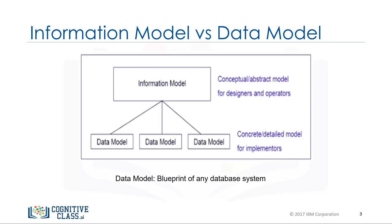Information models and data models are different and serve different purposes. An information model is at the conceptual level and defines relationships between objects. Data models are defined at a more concrete level, are specific, and include details. A data model is the blueprint of any database system.